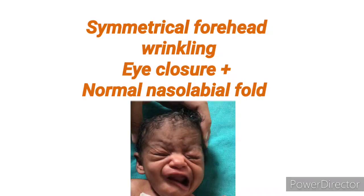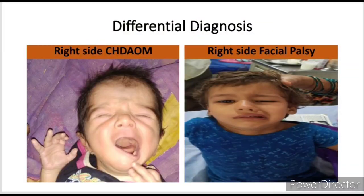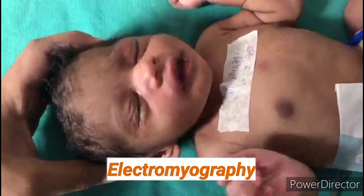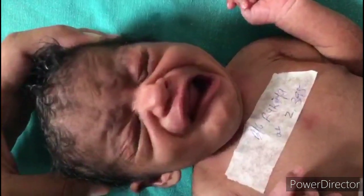We have to differentiate this condition from facial palsy. In congenital hypoplasia of depressor angularis oris, the patient will have symmetrical forehead wrinkling, eye closure is possible, and the nasolabial fold is normal. In facial palsy, the patient will have absent forehead wrinkling on the affected side if it is a lower motor neuron lesion, the nasolabial fold will be affected, and the child will not be able to close the eye on the affected side. This picture shows the clear difference between these two conditions. Electromyography can be done as an investigation.